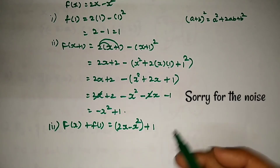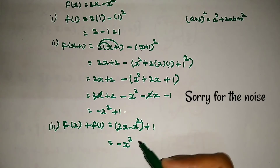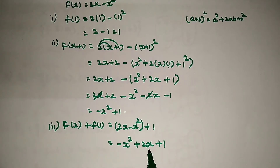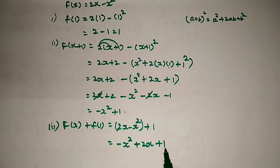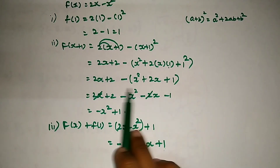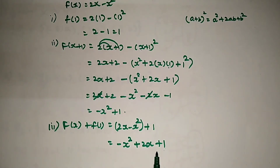So f of x plus f of 1 is equal to 2x minus x squared plus 1. Written in standard form, the constant term is 1, then 2x, and then x squared. This is very easy — you substitute what you need: if we substitute 1 we get f of 1, if we substitute x plus 1 we expand the whole square. That's the process for all three parts.